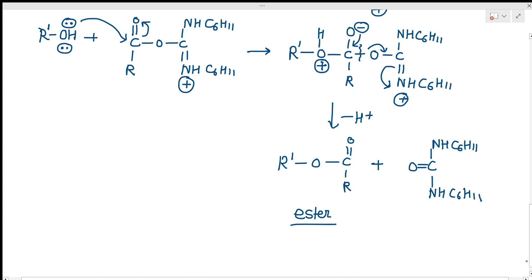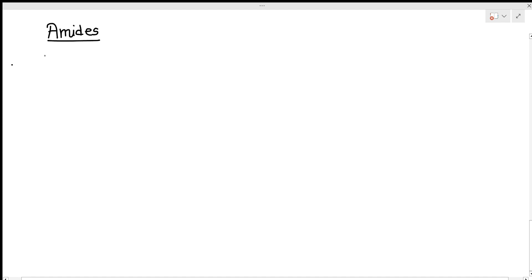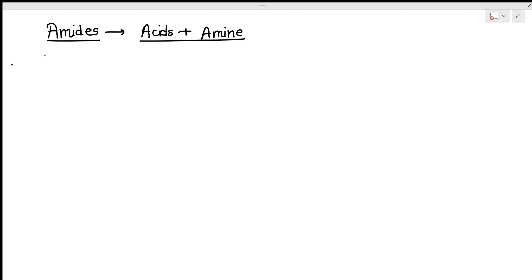DCC acts as a dehydrating agent, abstracting the water molecule from the bond formation of R-OH and R-COOH. Similarly, DCC can be used in the preparation of amides. Amides are formed by the reaction of acids with amines, but their formation is not straightforward. When DCC is used, the reaction proceeds at room temperature with a good yield.